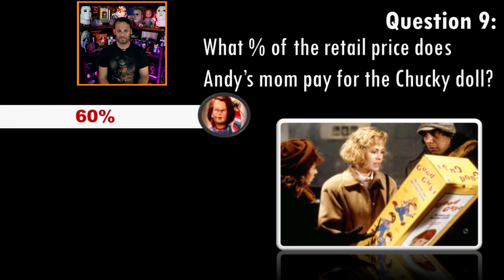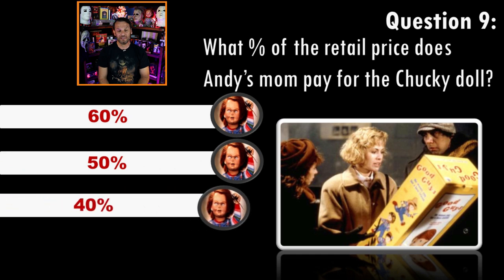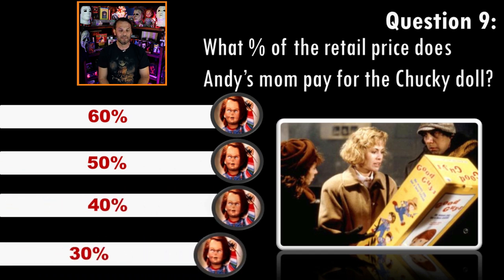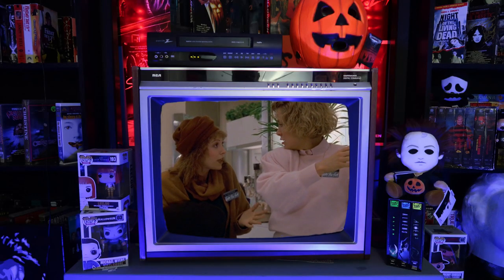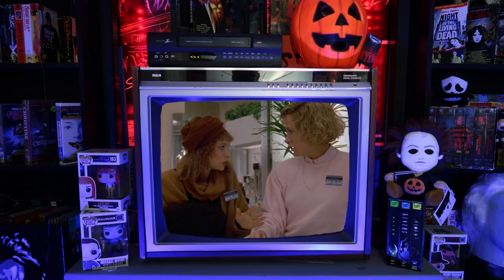Question nine: what percent of the retail price does Andy's mom pay for the Chucky doll? Sixty percent, fifty percent, forty percent, or thirty percent? Answer: thirty percent. I originally put fifty percent — I thought she got it for half off — but if you really listen, the guy offers fifty and she gets him down to thirty. So the correct answer is thirty percent.